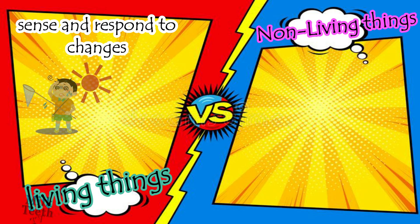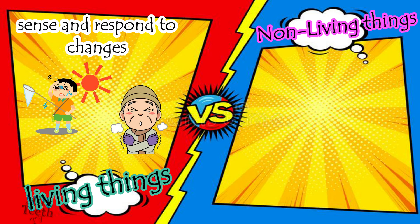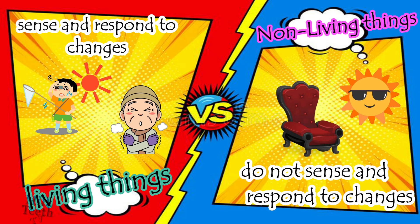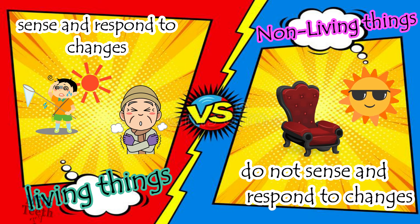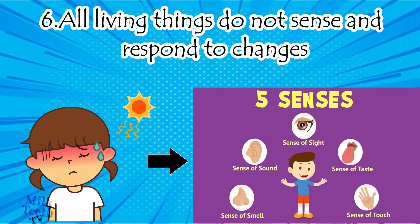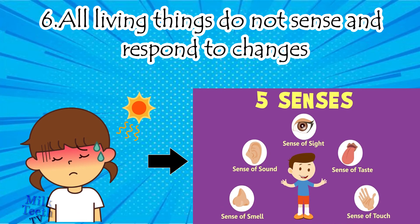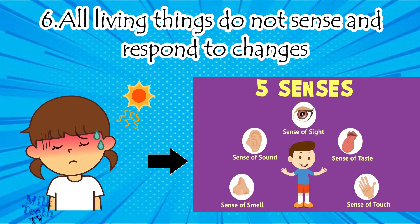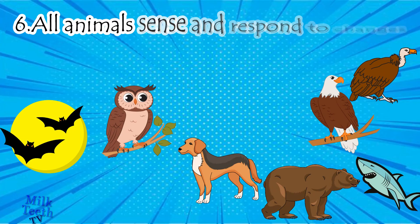The sixth difference is that all living things sense and respond to changes around them — we all feel hot as well as cold. Non-living things do not sense or feel changes around them. For example, will this chair start to feel hot if we keep it in the Sun? No. Human beings sense and respond using their five senses — they can smell, hear, see, taste, and feel what is happening around them.